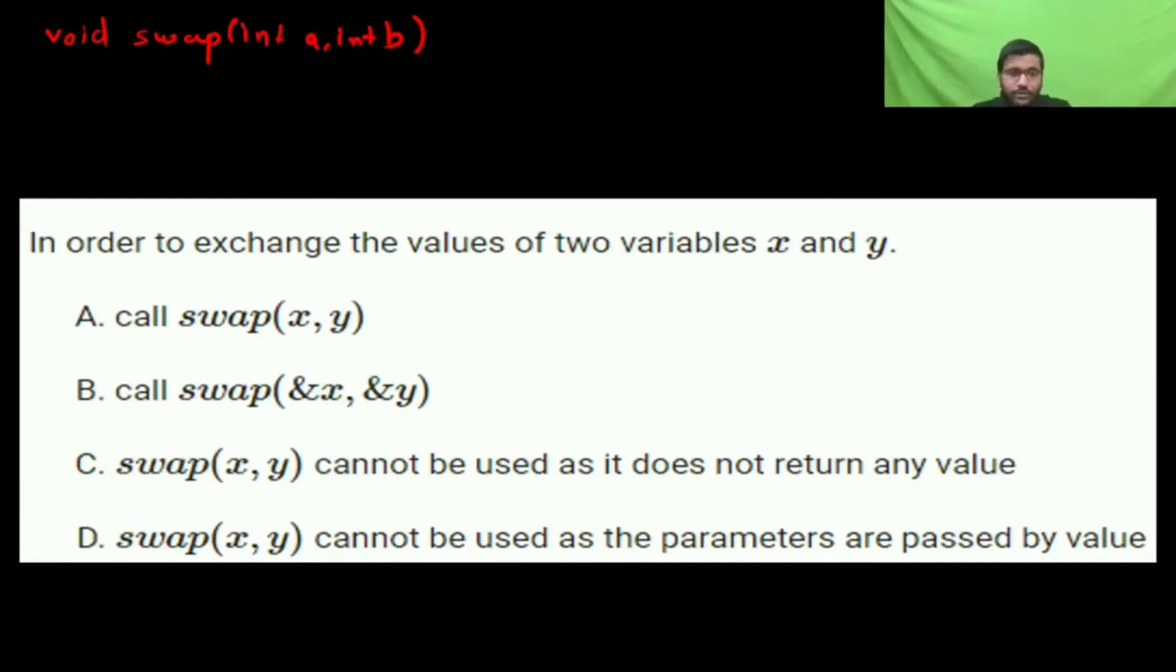Going to option C. The option is like int temp, and temp equals A, A equals B, and then B equals temp. This is the thing they are doing and closing.